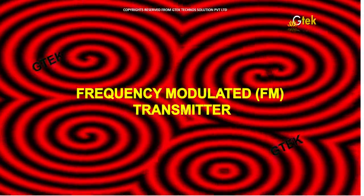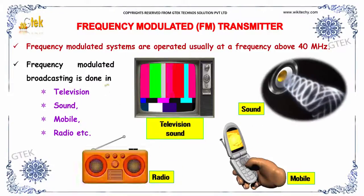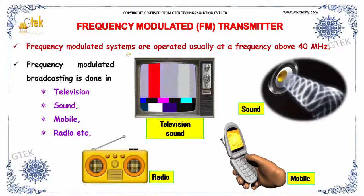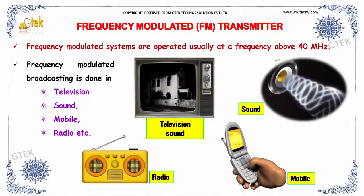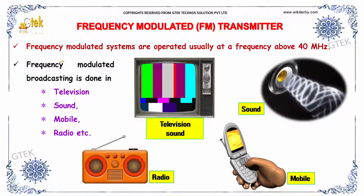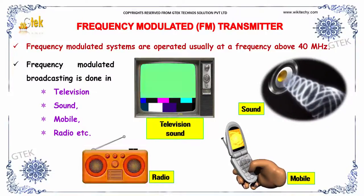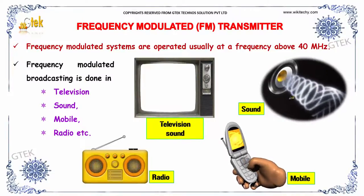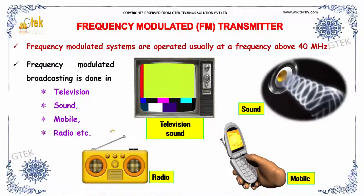Frequency modulated transmitter. Frequency modulated systems are operated usually at a frequency above 40 MHz. Frequency modulated broadcasting is done in television, sound, mobile, and radio — these are the areas where frequency modulation is used.